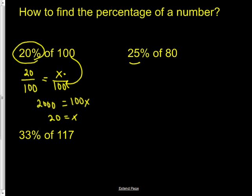Same thing over here. How do I make 25% as a fraction? 25 over 100 equals—let's see, 80 is the full amount so that'll be down at the hundred percent range, and X is going to be whatever 25% of 80 is.